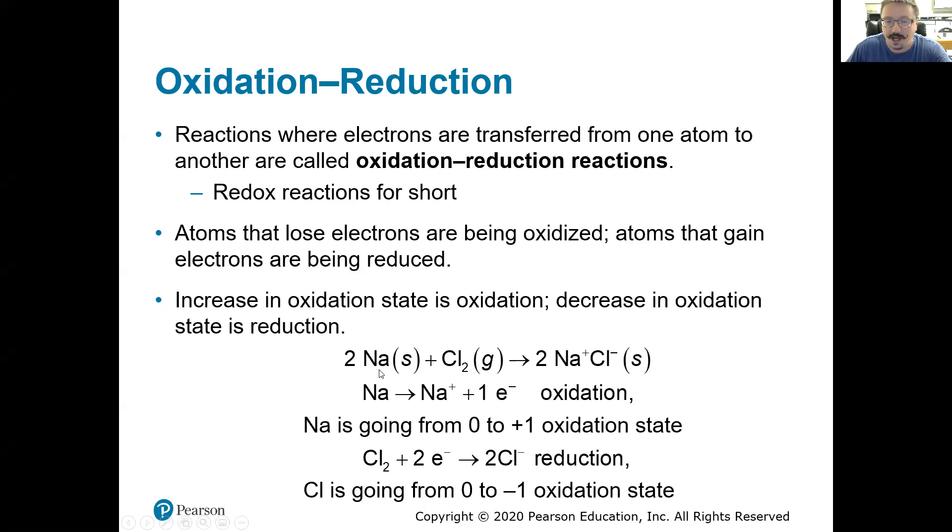We have solid sodium reacting with chlorine gas and we get sodium chloride table salt. So sodium, solid, metal, it's in its naturally occurring state. Its oxidation state is zero. Chlorine gas, diatomic gas in its naturally occurring state. Its oxidation state is zero. And we go over to the ion. We have monoatomic ions, plus one charge, plus one oxidation state, minus one charge, minus one oxidation state.